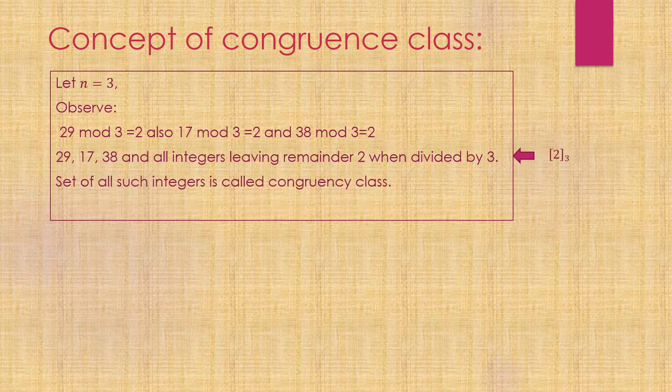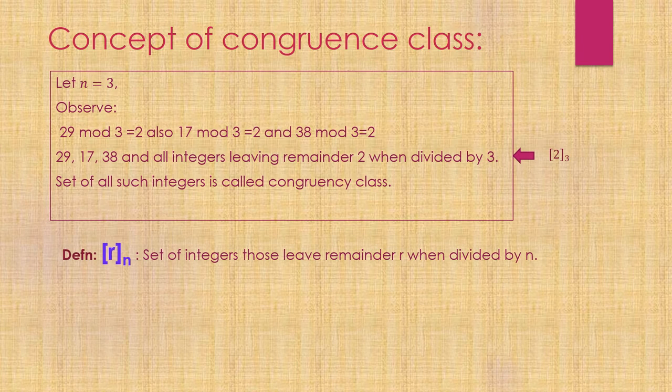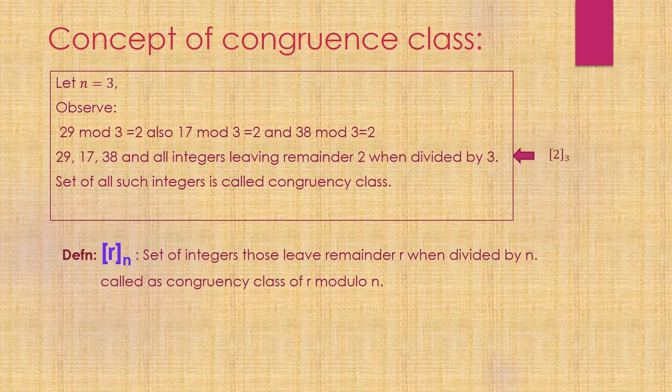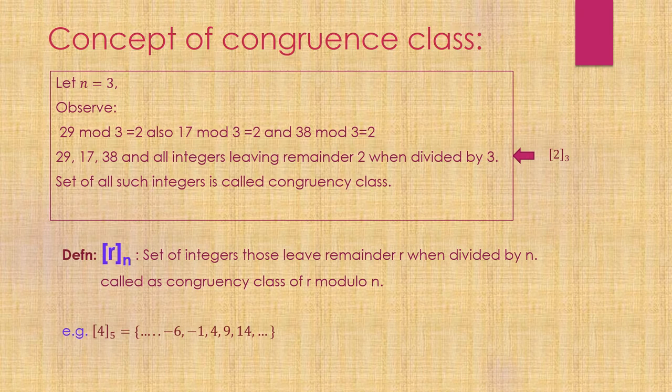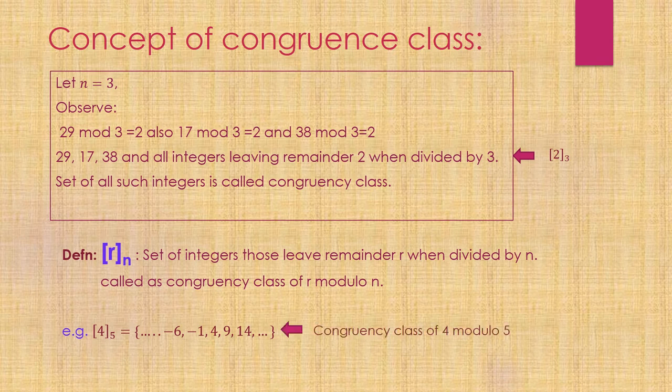The set of all such integers is called a congruency class. The congruency class of 2 modulo 3 is the set of all integers which leave remainder 2. Mathematically denoted by [R] mod n: the set of all integers leaving remainder R when divided by n. For example, the congruency class of 4 modulo 5 includes -6, -1, 4, 9, 14.